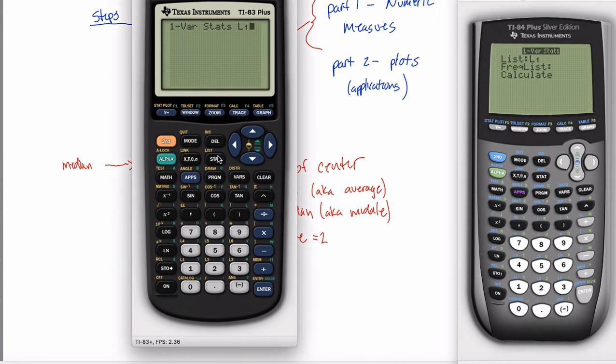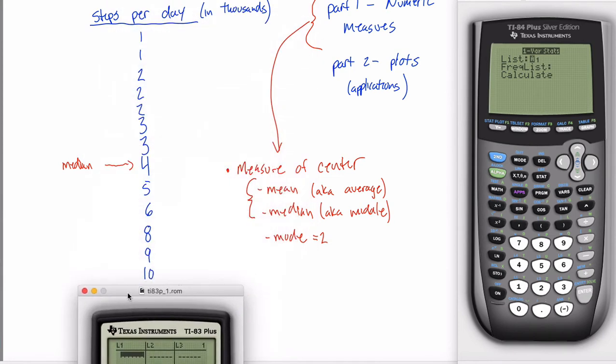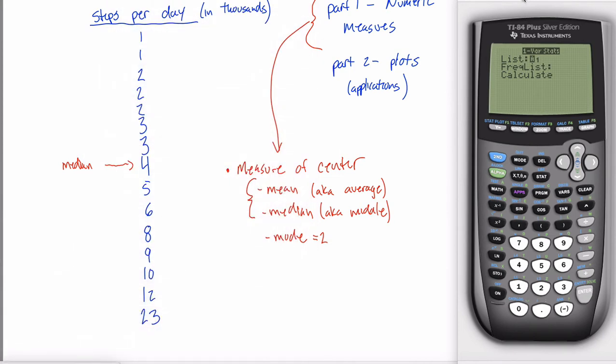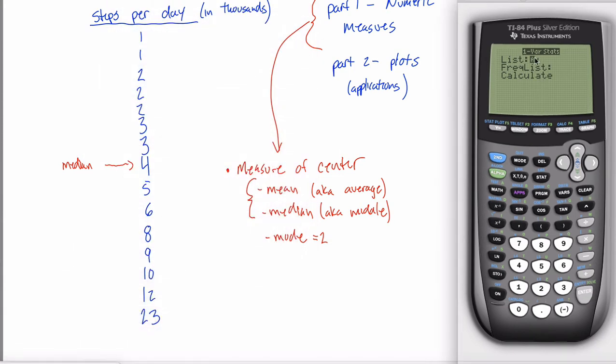So if I tried to have it do one variable statistics on an empty list, it would give me an error. So maybe I'll demonstrate what the output would have looked like on this calculator over here. Tell it what list my data is in. Something else you can do that we will never, ever, ever do in this class is give your calculator another list, like L2 or L3. That's your frequency list. So we're never going to do this in this class. You're probably not too worried about it. But just FYI, a lot of the calculator functions you use will give you the option to have a frequency list.